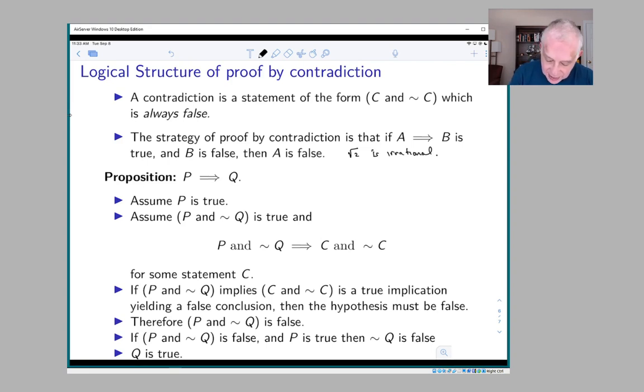But when you unwind it a little bit, it kind of is an implication because what it boiled down to proving was the following: if a and b are integers and a squared minus 2b squared equals 0, then a equals b equals 0.